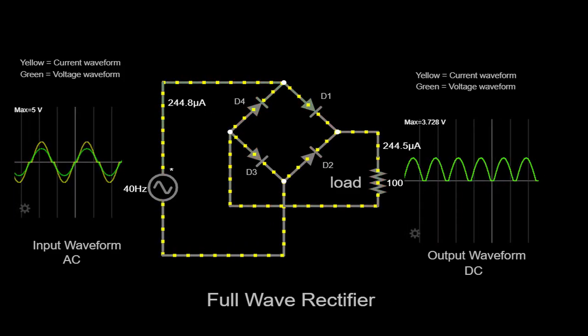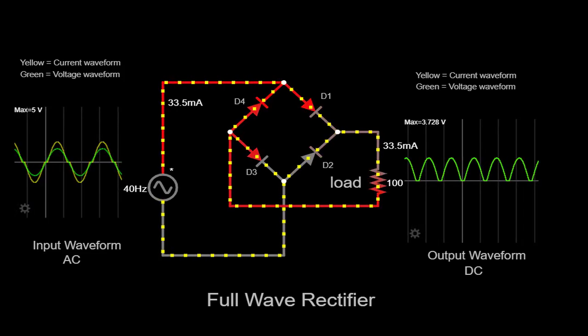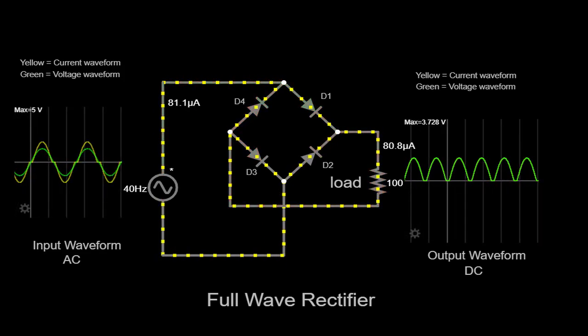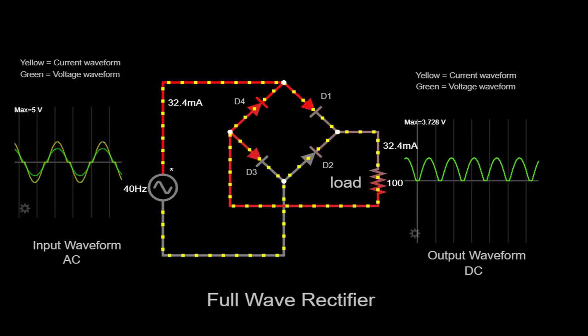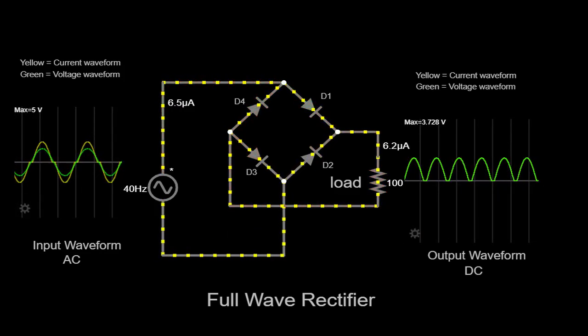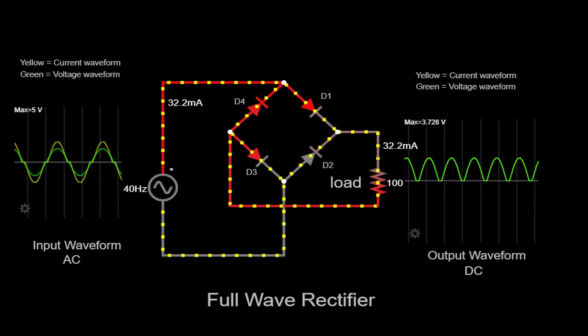Now, let's take a closer look at the bridge rectifier circuit. It consists of four diodes, D1, D2, D3, and D4 arranged in a specific configuration known as a bridge. This arrangement allows us to rectify both the positive and negative half cycles of the AC input.